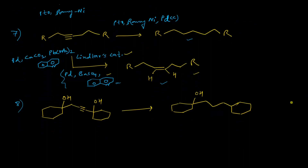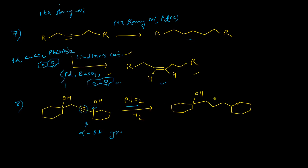The last example shows that if you use platinum oxide, hydrogenation of the triple bond as well as hydrogenolysis of a carbon–oxygen bond both occur simultaneously. This is a typical case where an alpha-OH group is present with respect to a triple bond, and platinum oxide causes both the hydrogenation of the triple bond and the hydrogenolysis of the C–O bond to take place at the same time, giving the corresponding product.